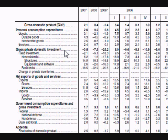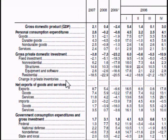The next main category, gross private domestic investment, covers investments from businesses. If the economy is doing well, businesses spend more to invest and expand; if not, they spend less. This section is broken down into fixed investment and the change in private inventories. Fixed investment has two parts: residential investment — construction of homes and apartment buildings — and non-residential investment in things like office buildings, warehouses, tools, equipment, and software.